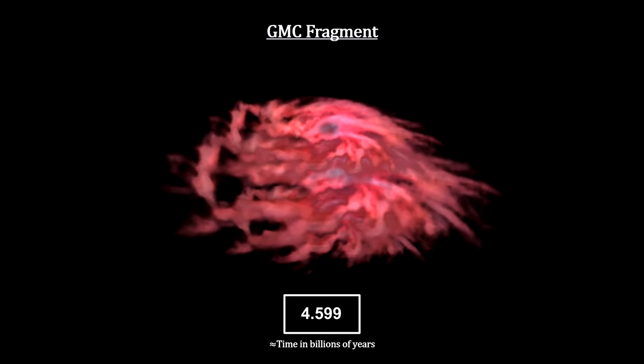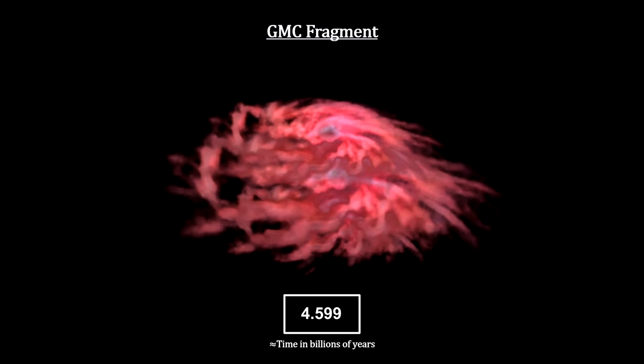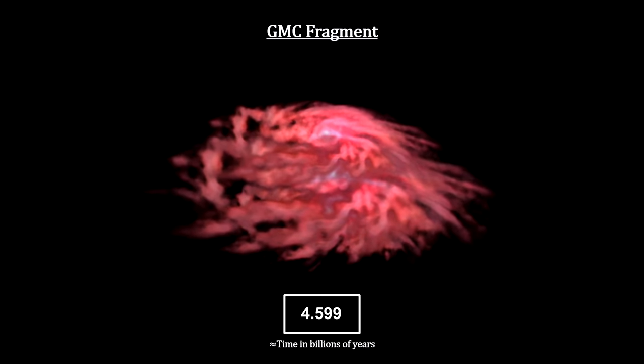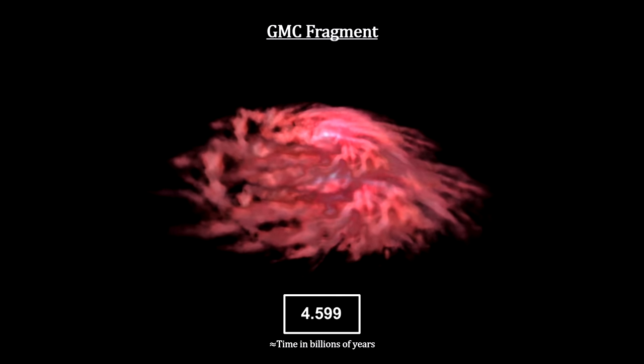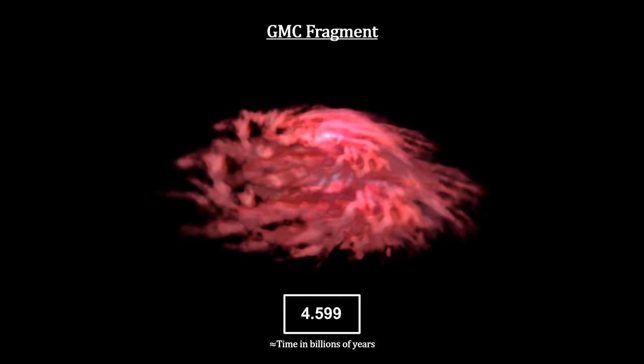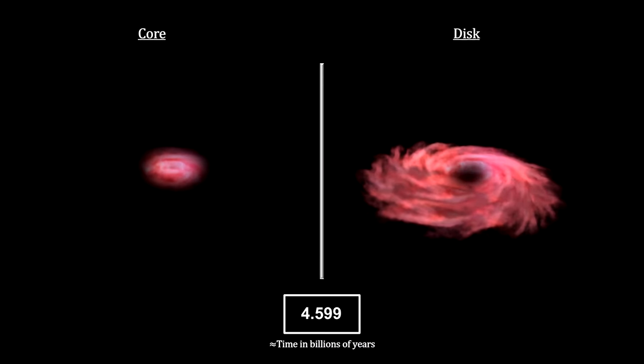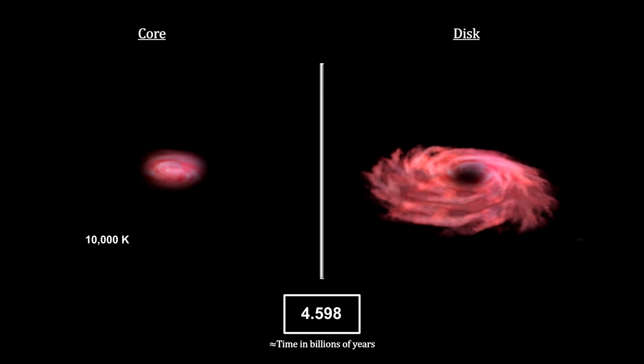Over the next million years, a circumstellar disk formed around a central object accreting mass from the disk material orbiting around it. From here on, we'll cover the development of the core object and the circumstellar disk in parallel. Over the course of the next million years, the central object continued to accumulate matter and its core temperature reached 10,000 degrees Kelvin.